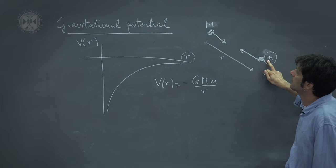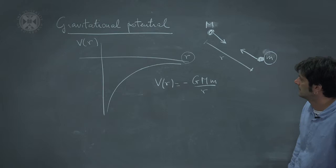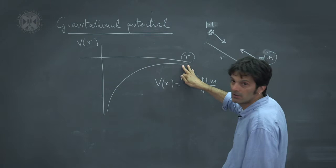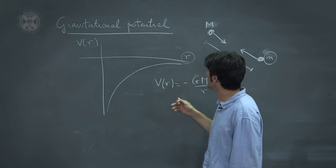which is due to the gravitational interaction with the particle capital M up here. So you see that when you are far away from the source of the gravitational force, the potential energy goes to zero, while it becomes very large and negative as you get closer and closer to the source of the gravitational force.